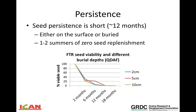One of the key weak links of feathertop Rhodes grass is its seed bank persistence — approximately 12 months. Unlike most weed species where buried seed persists longer, that doesn't seem to be the case here. Whether seed is buried at two, five, or ten centimetres or left on the soil surface, viability drops fairly fast, and by 12 to 18 months there is basically no viable seed left. In practice, this means that with intensive management for one to two summers we can largely eliminate the problem — provided we prevent any further seed replenishment.